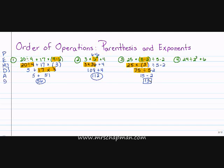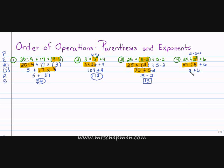Next: twenty-four divided by two cubed plus six. No parentheses. I have an exponent: two cubed means two times two times two — two times two is four, times two is eight. Rewriting: twenty-four divided by eight plus six. Division first: twenty-four divided by eight is three. Then three plus six is nine.